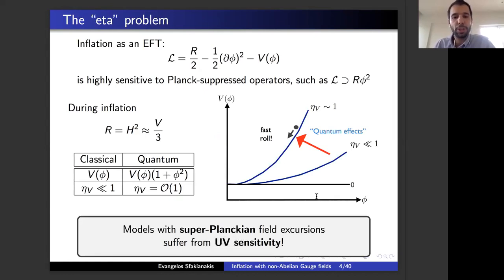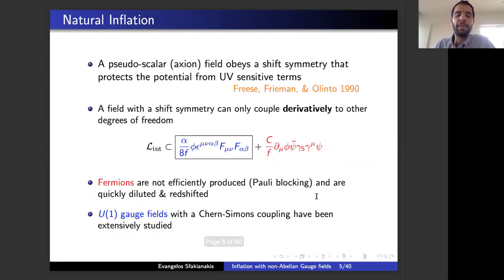For the eta problem, just to get rid of those Planck-suppressed operators that spoil our potential due to quantum corrections, a very nice solution was proposed in 1990, which is to impose or assume a shift symmetry. Make the inflaton field a pseudo-scalar, an axion, which has shift symmetry that protects the potential from UV corrections. An exact shift symmetry protects the potential from everything, so you cannot write down any potential term. In an axion model, some non-perturbative effects, some instantons, will break the exact shift symmetry and create some potential.